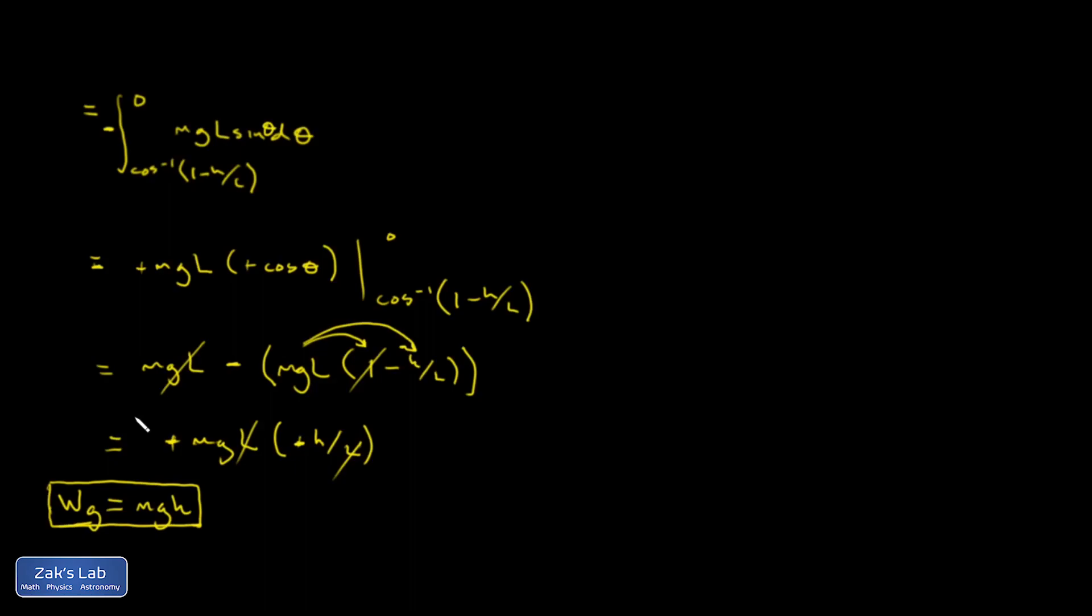Now, we're going to develop a theory of energy that allows us to bypass all this integration stuff. And with a bit of experience, you could just look at the problem right from the beginning and say, it descended through a height of H. I know the work of gravity is going to be MGH regardless of the path.